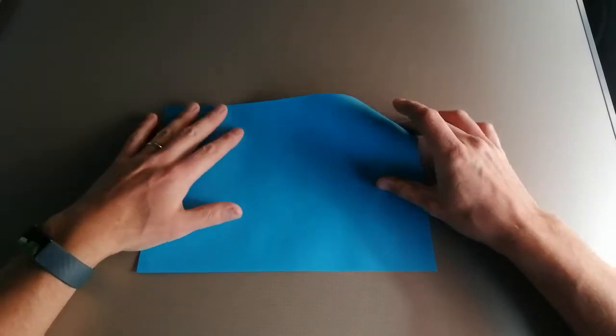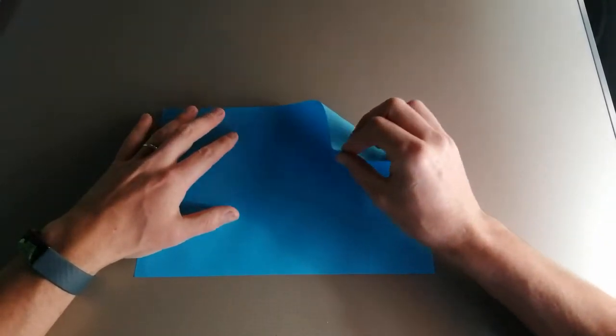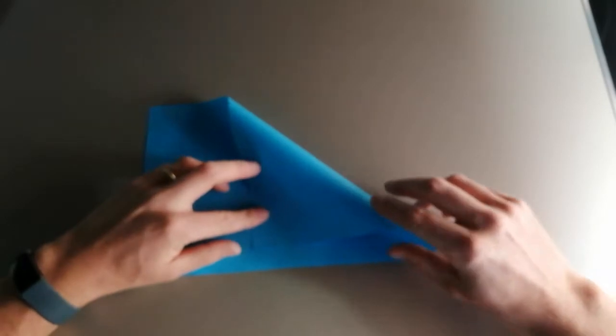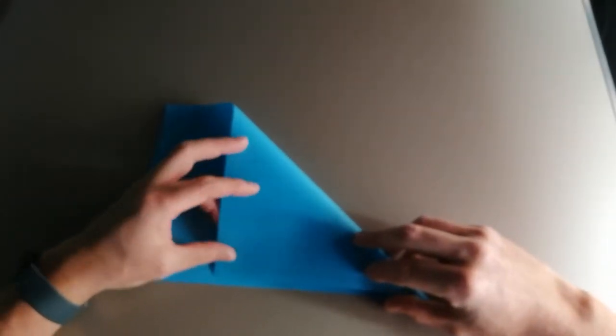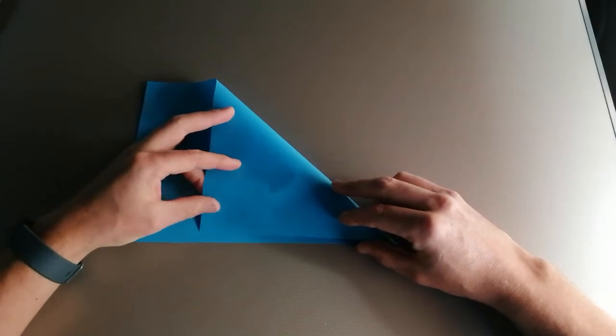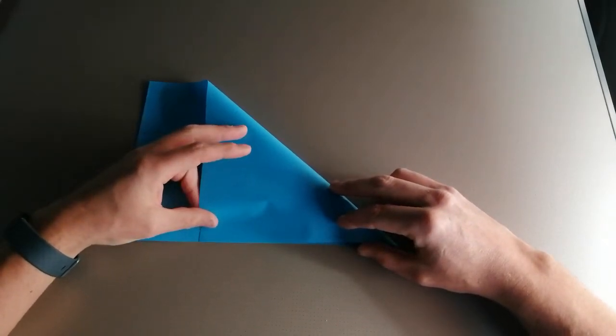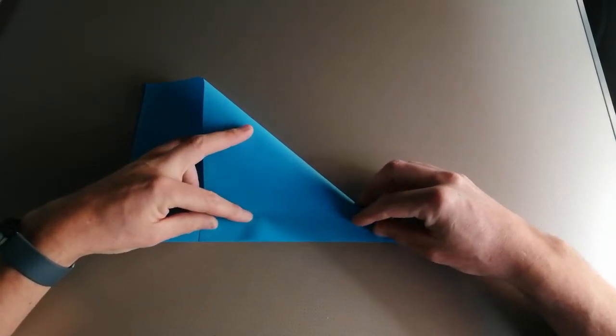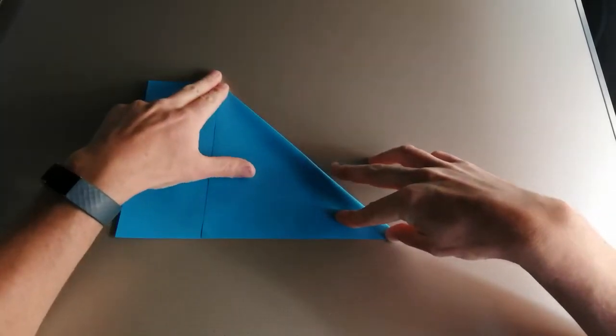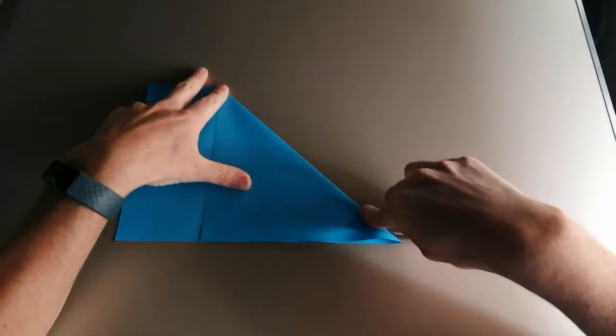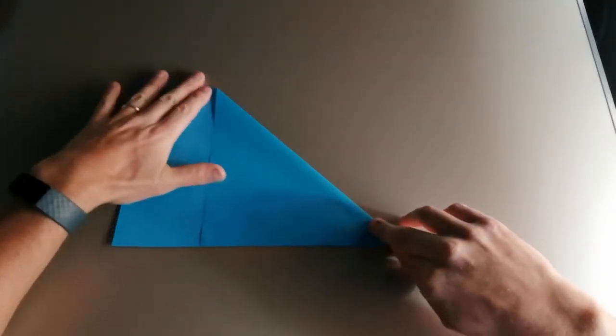The first thing we're going to do is take one corner and fold it down so that this edge here is parallel with the other one, pressing it down to form a crease.